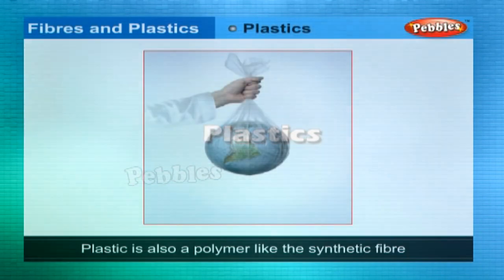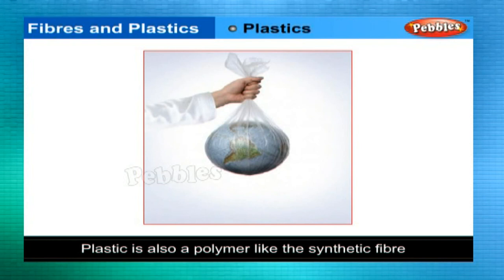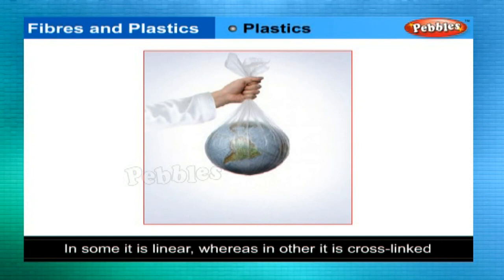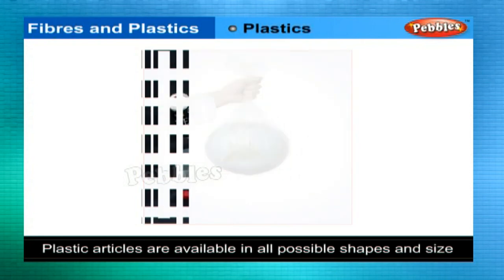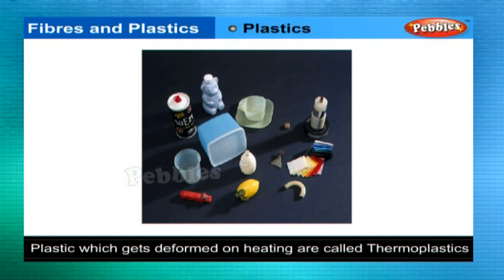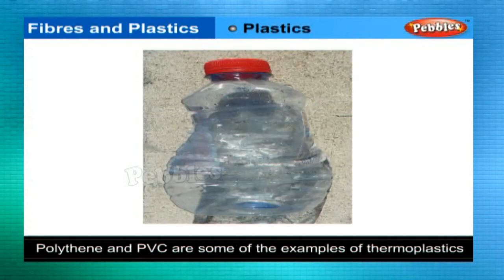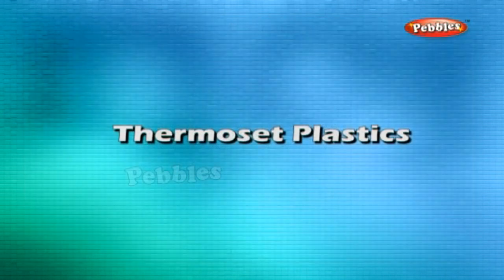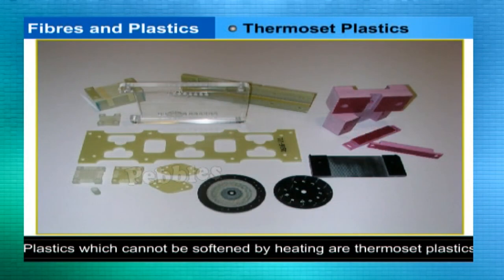Plastics: plastic is also a polymer like synthetic fiber. All plastics do not have the same arrangement of units — in some it is linear, whereas in others it is cross-linked. Plastic articles are available in all shapes and sizes. Plastics that get deformed easily on heating and can be bent easily are known as thermoplastics. Polythene and PVC are examples of thermoplastics, used for manufacturing toys, combs, and various containers.